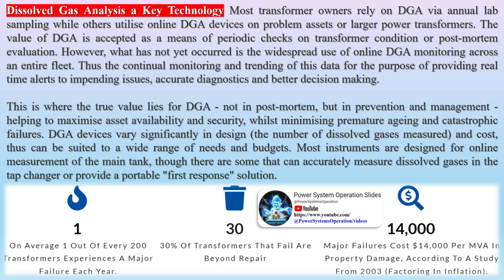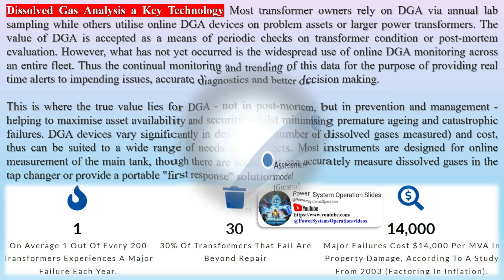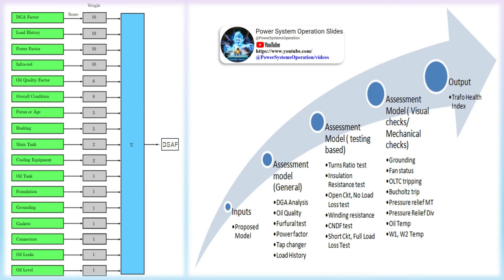DGA devices vary significantly in design, the number of dissolved gases measured, and cost, and thus can be suited to a wide range of needs and budgets. Most instruments are designed for online measurement of the main tank, though there are some that can accurately measure dissolved gases in the tap changer or provide a portable first response solution.